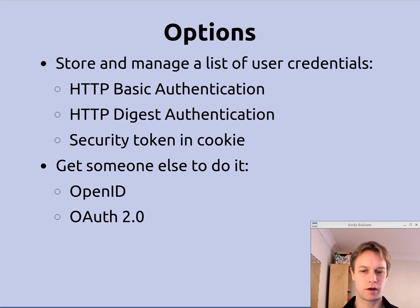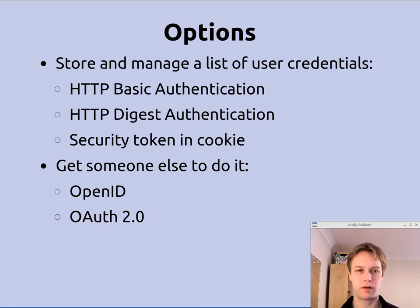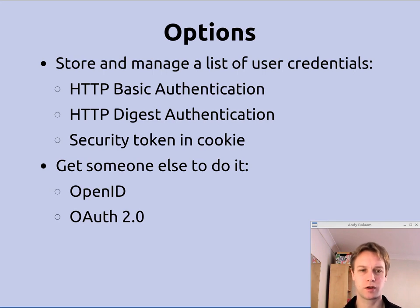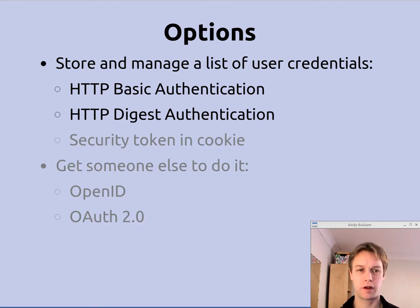There are a lot of options for how we could provide security in our API. Two main categories: you can either store and manage a list of usernames and passwords yourself, with three ways to do that — HTTP Basic authentication, HTTP Digest authentication, or storing a security token in a cookie after login. There are also other ways where someone else holds the list of usernames and passwords, like OpenID and OAuth. But for this video, we're only covering HTTP Basic and a tiny bit about HTTP Digest.